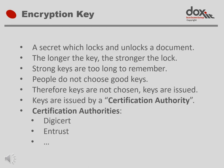An encryption key is secret information which can be used to lock and unlock the contents of a document. In Part 2 we saw that the longer a key, the stronger it is against a brute force attack, when an intruder tries to break in by guessing keys. Strong keys are too long to remember. We have already mentioned that people do not choose good keys. Therefore, encryption keys are not chosen by users — encryption keys are issued.